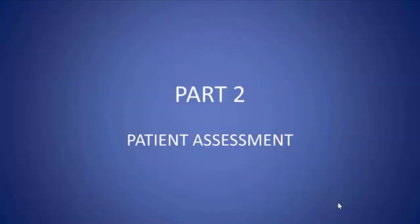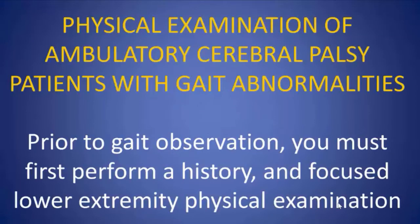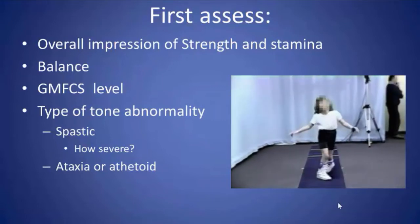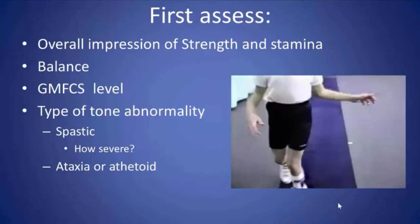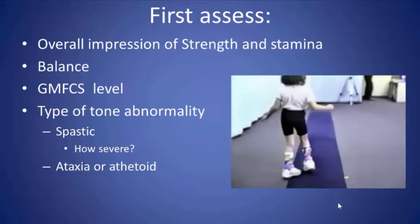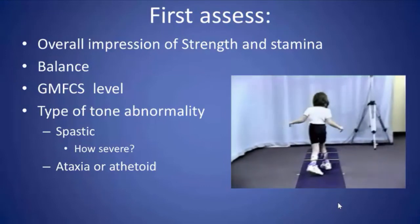Welcome to the second part of this series of lectures, about the physical examination of ambulatory cerebral palsy patients with gait abnormalities. Prior to doing your gait analysis, you have to first perform a history and a focused lower extremity physical examination with some special tests. The first thing I do is watch the patient walk — not to do a full gait analysis, but just to get an overall impression of their strength, stamina, and major deformities.